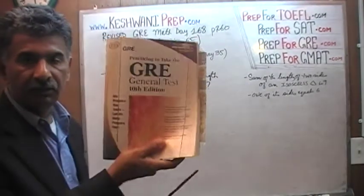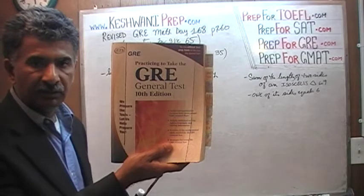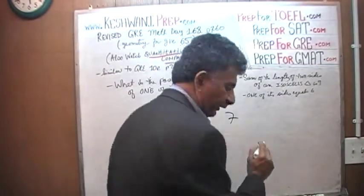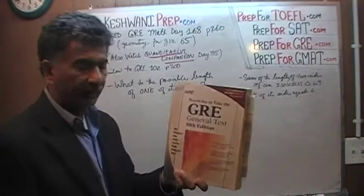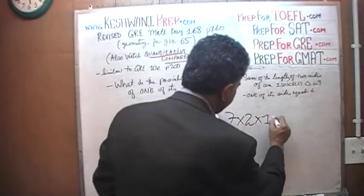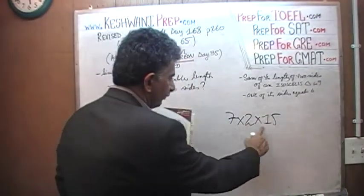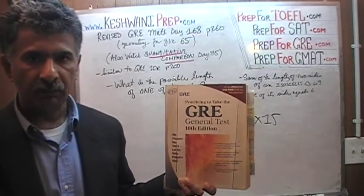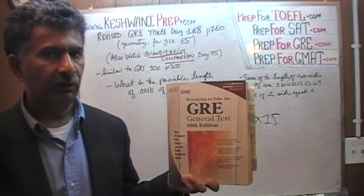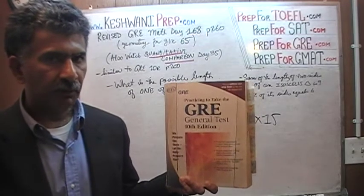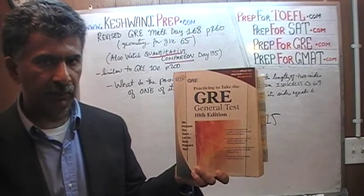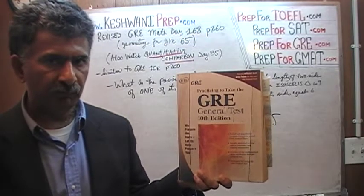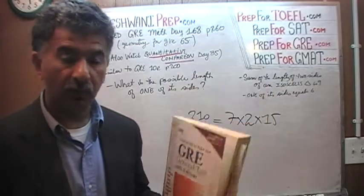This book right here, the 10th edition, which is based on the old GRE format, contains seven exams. Each exam has two sections and each section has 15 quantitative comparison questions. 15 times 2 is 30, times 7 is 210. This book has 210 quantitative comparison questions, which have not changed — quantitative comparison questions still exist in the new format. If you are interested in getting hold of this book, you will find solutions to every single one of those 210 quantitative comparison questions on my channel.